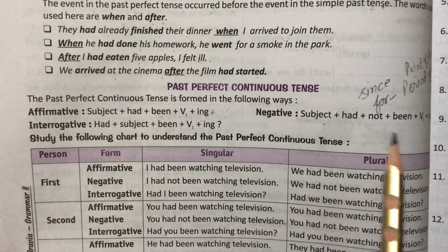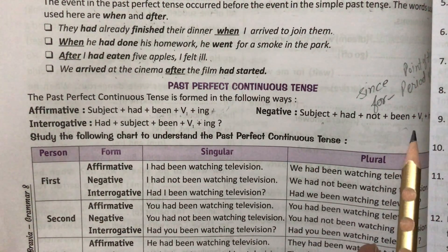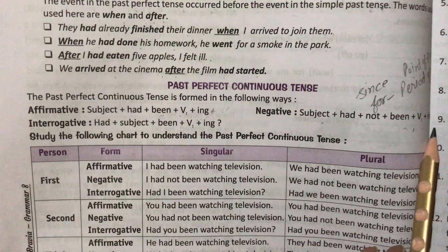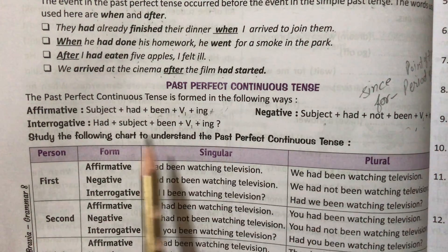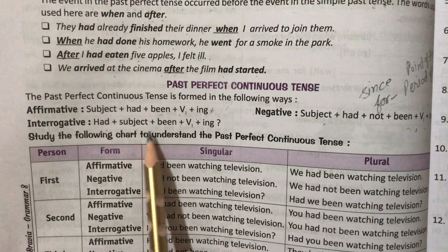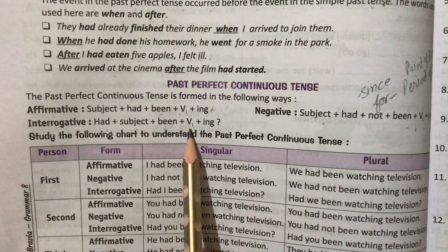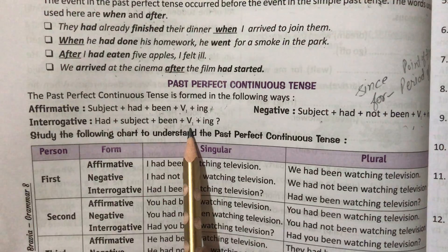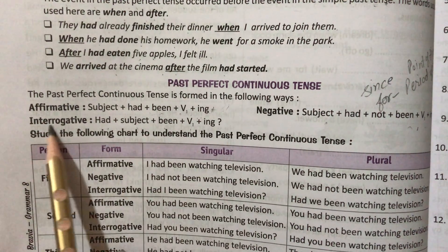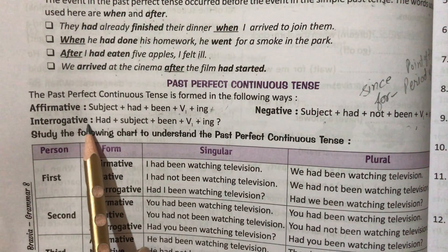Negative: Subject plus had not plus been plus verb's first form plus object. Interrogative: Had plus subject plus been plus verb's first form plus ing, with a sign of interrogation.